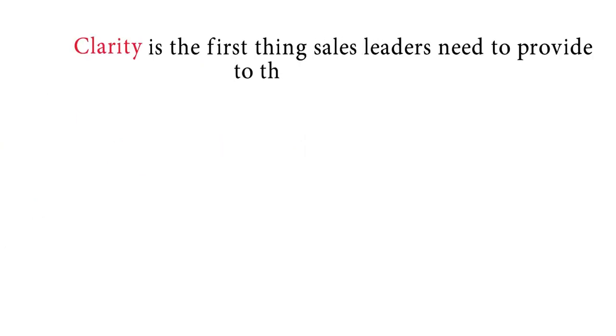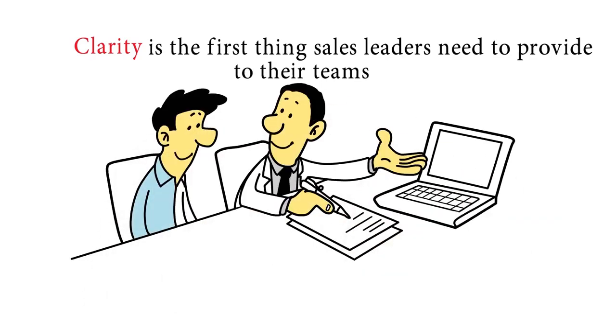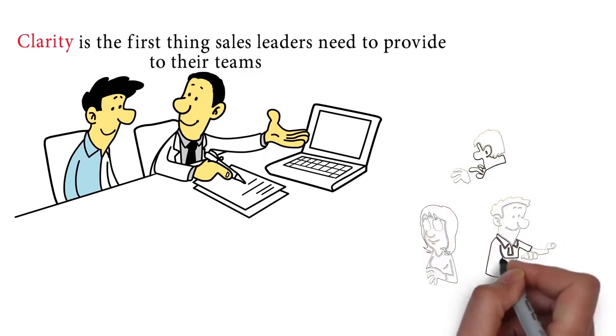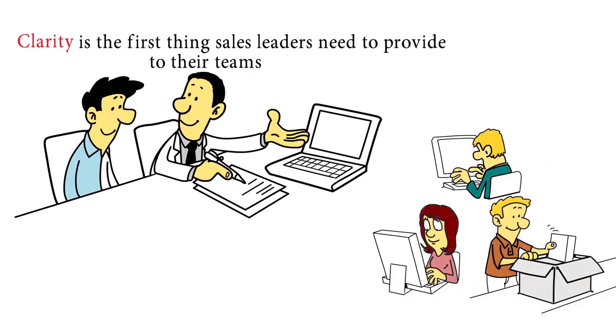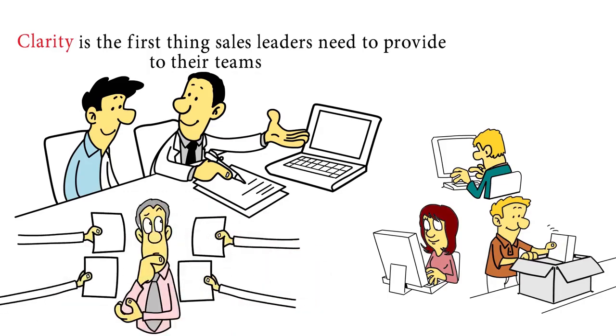Clarity is the first thing sales leaders need to provide to their teams. Salespeople need to know why they're being asked to work differently. So many times, many random things are happening. Everyone has the right intention to do well, but salespeople are often unsure of how to use the help provided.